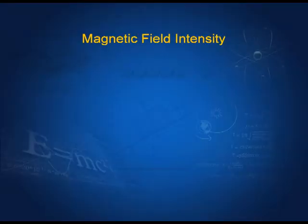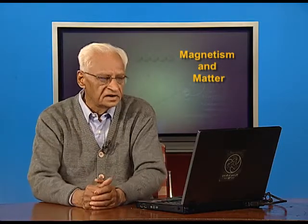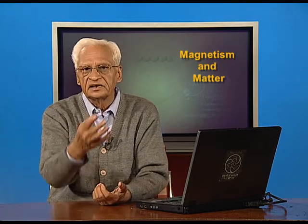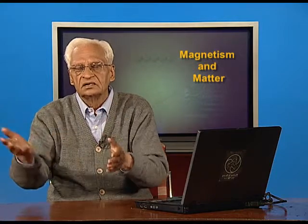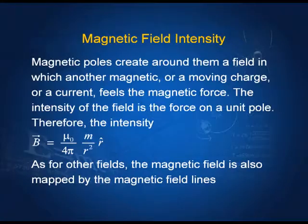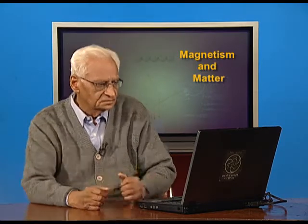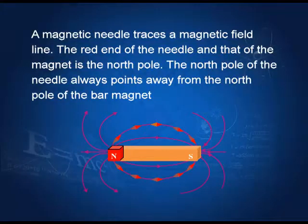I am going through this quickly since we have covered it before. The magnetic field intensity can be defined in the same way as the electric field intensity. If there is a magnet, it creates around itself a field in which any other magnet, current, or charge will feel its effect. We never actually get a monopole field — we always have a field due to a dipole. Like other fields, the magnetic field is depicted through magnetic field lines.